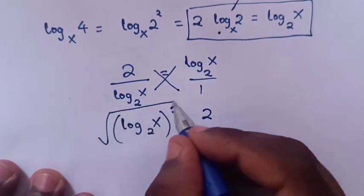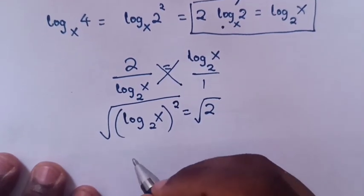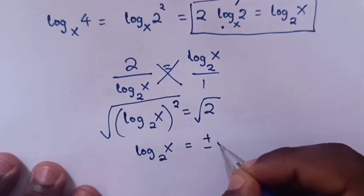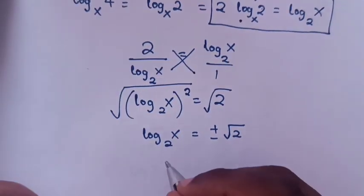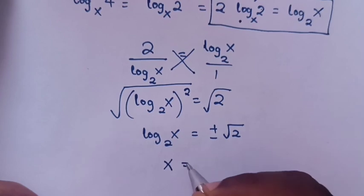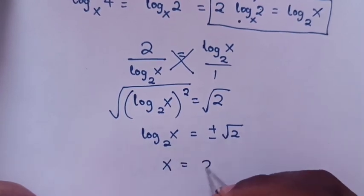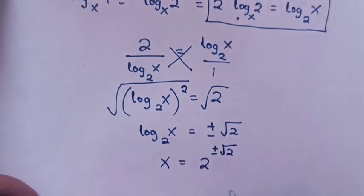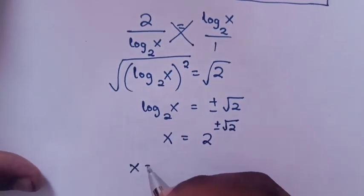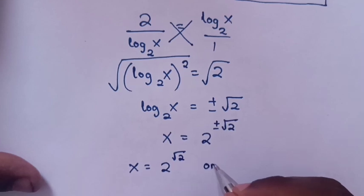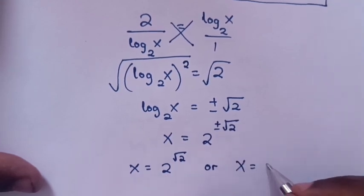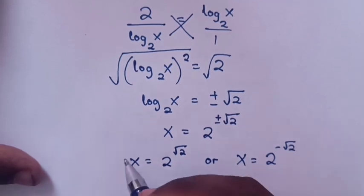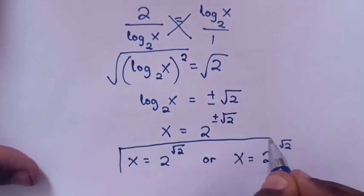Applying square root to both sides gives log x base 2 equals plus or minus square root of 2. Therefore x equals 2 to the power of plus or minus square root of 2. So x equals 2 to the power of square root of 2, or x equals 2 to the power of negative square root of 2. These are the values of x.